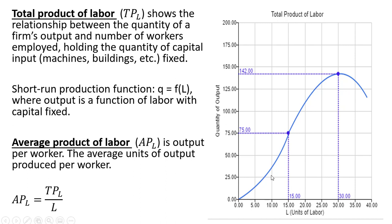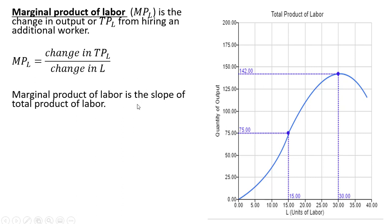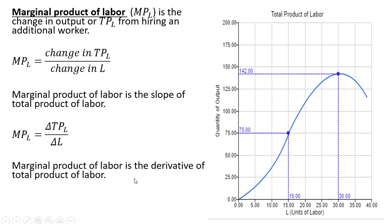Here is a typical shape of a total product of labor curve. There's also a marginal product of labor — this is the change in output, or total product of labor, from hiring an additional worker. It is given by the change in total product of labor divided by the change in units of labor. The marginal product of labor is the slope of the total product of labor, and we can write it in slope form. Or, given that the slope is a derivative, if we're using calculus, we can write the marginal product of labor as the derivative of the short-run production function with respect to L, units of labor.